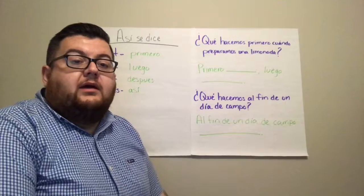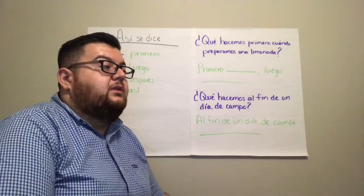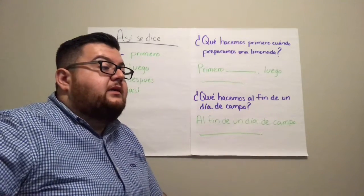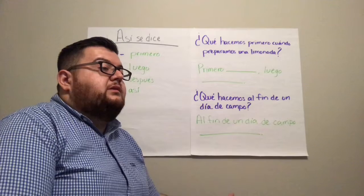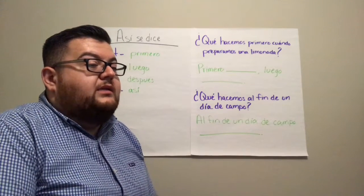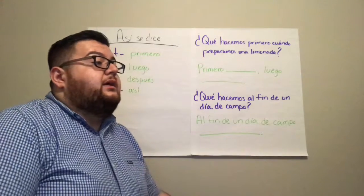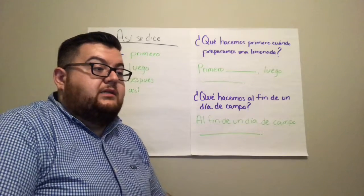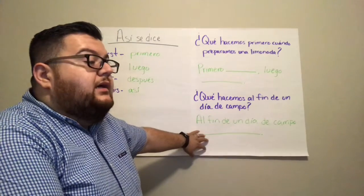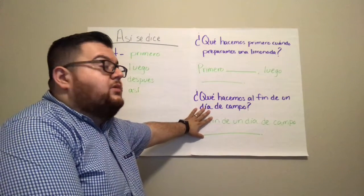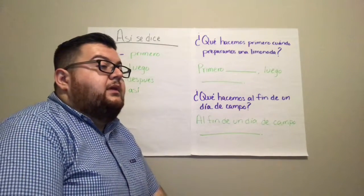It would sound something like this: 'Hola estudiantes. Recuerden que hicimos el calentamiento donde vimos el video de cómo se hacían las paletas — vimos que tiene toda una secuencia. Primero se usó ciertos materiales, luego se hizo otra mezcla, etc. Ahora vamos a usar ese vocabulario que acabamos de aprender para responder a unas preguntas. Aquí en la hoja tenemos dos preguntas que vamos a contestar usando nuestro vocabulario académico. La primera dice: ¿Qué hacemos primero cuando preparamos una limonada? ¿Quién me puede contestar esta pregunta?'